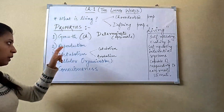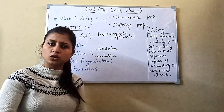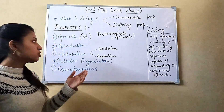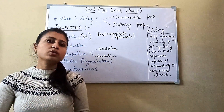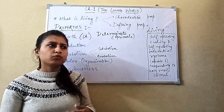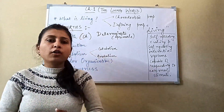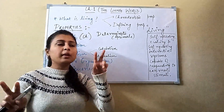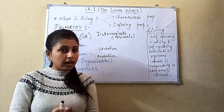Next, reproduction means the process of production of offspring. It can be sexual — involving two parents — or asexual, involving only a single parent. In unicellular organisms like amoeba, reproduction occurs by binary fission — dividing into two cells. In unicellular organisms, growth and reproduction are synonymous — they are mutually inclusive events. In higher organisms, however, growth and reproduction are mutually exclusive — they are separate phenomena.